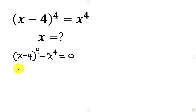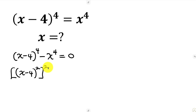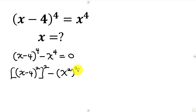This expression can also be written as X minus 4, all raised to power 2, inside a bigger bracket raised to power 2, because from indices powers multiply — so 2 times 2 gives back 4. Minus, we can write this as X squared, all raised to power 2, for the same reason, and this is equal to 0.